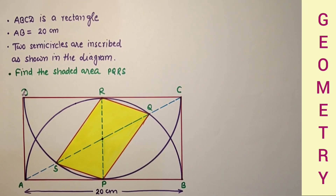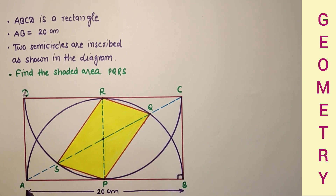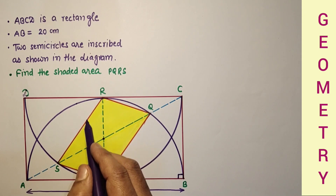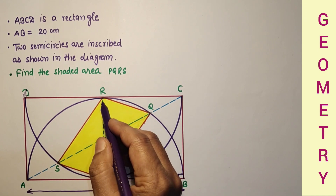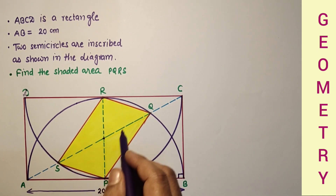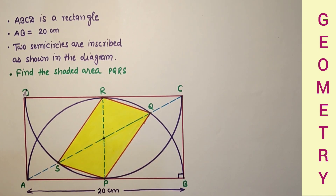This question is like this: ABCD is a rectangle, and two semicircles are inscribed according to the diagram given. This is the center of one semicircle and this is the center of the other semicircle. We have to find the area of this yellow shaded quadrilateral.